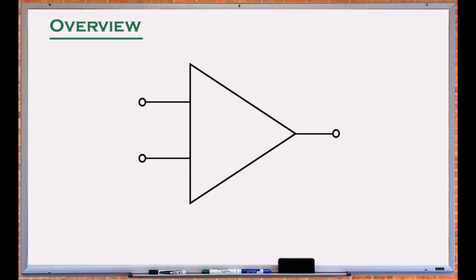An op-amp is symbolized by a three-terminal triangular block. It has two inputs, positive and negative input terminals, and one output.